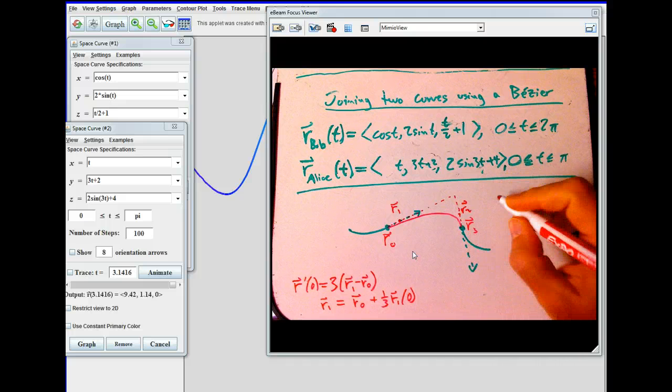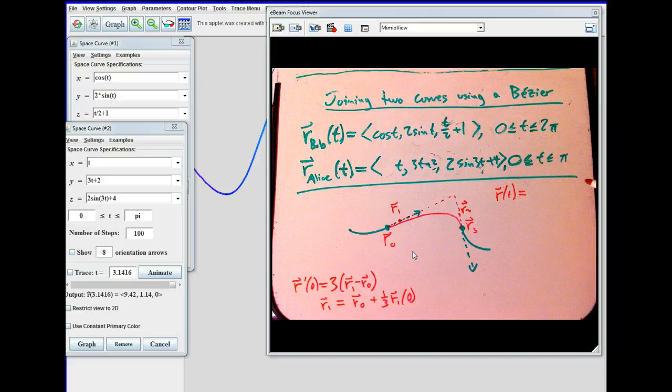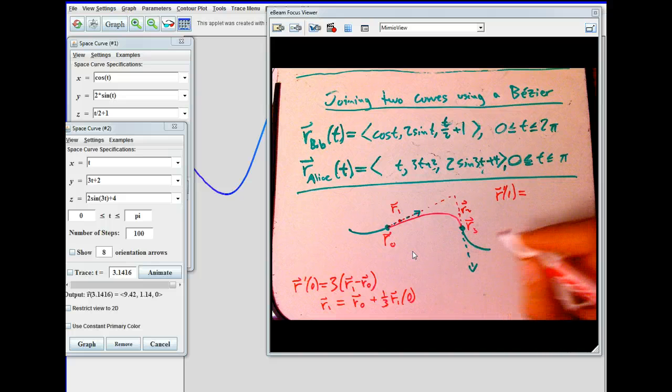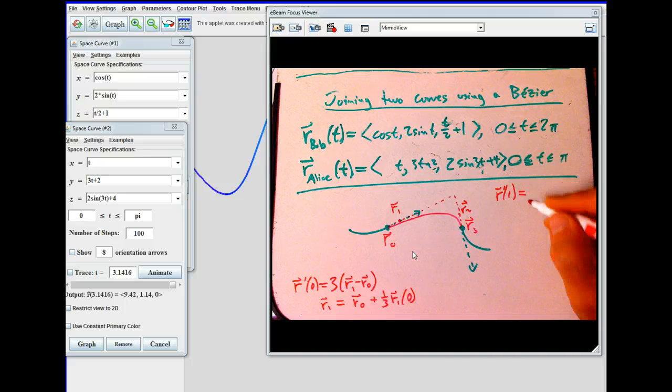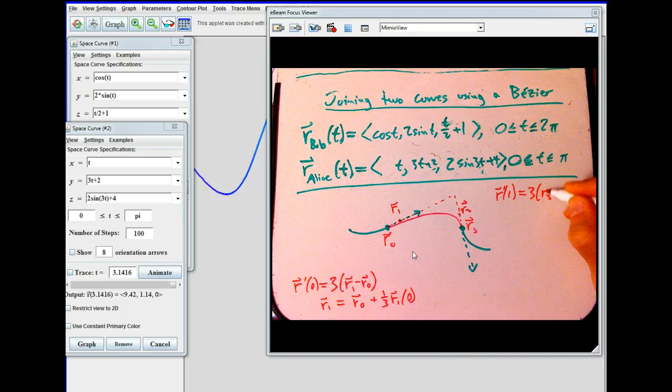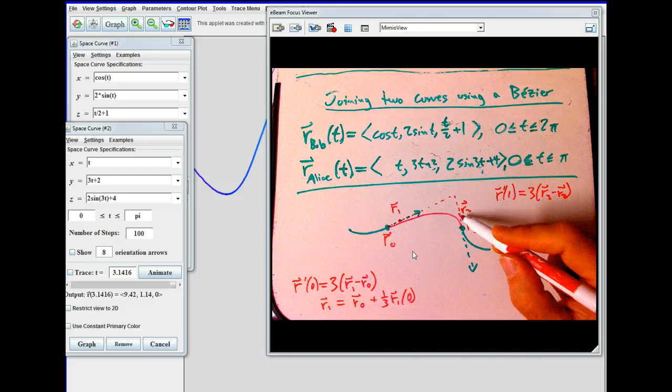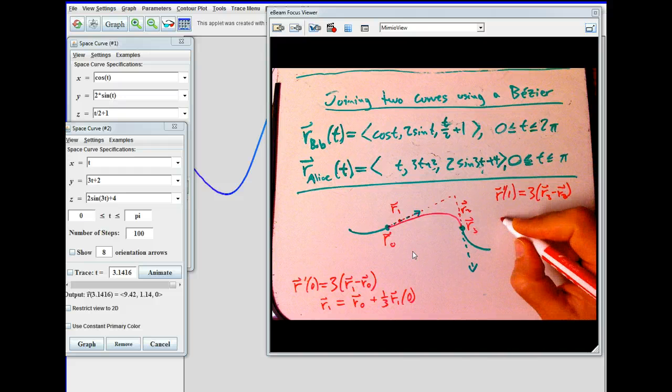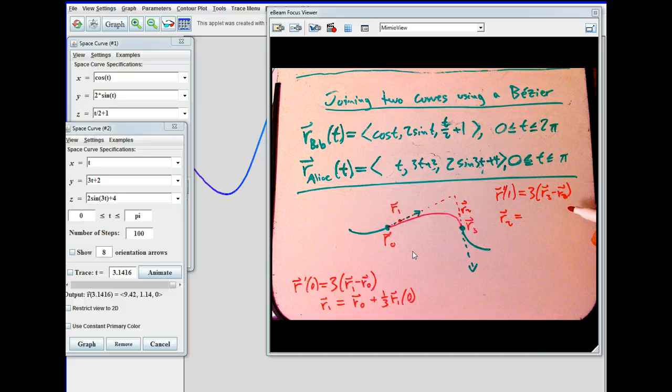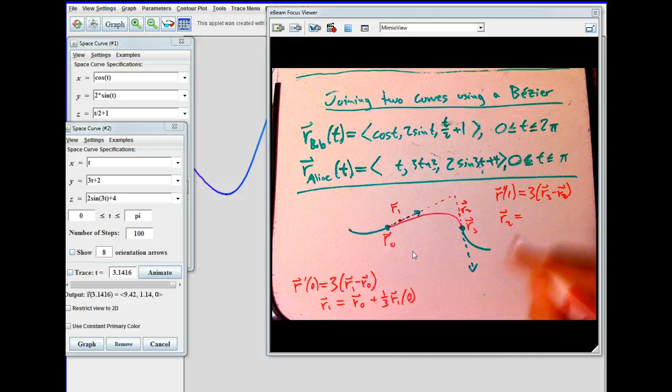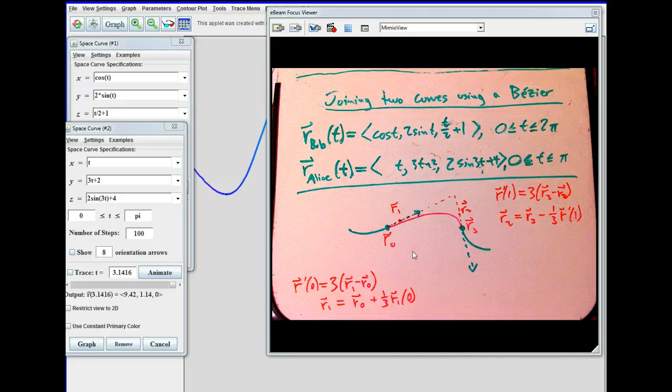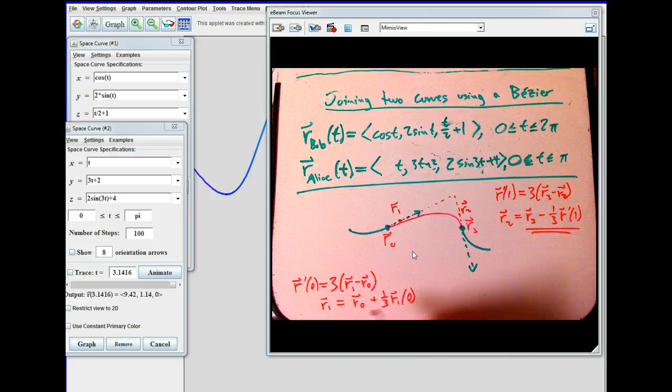Over here, R2. The equation was R prime of one, this velocity that ends the Bézier, which should match the starting of Alice. That was three times R3 minus R2. And so if we solve that for R2, it's going to be R3 minus one third R prime of one.